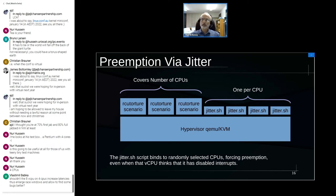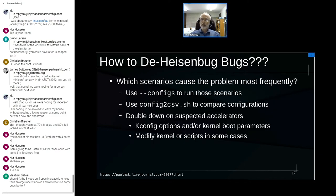Another approach: if only a few scenarios reproduce the bug, use --configs to run just those. The config-csv.sh script makes a spreadsheet of kconfig options and boot parameters for each scenario, which can point you right to the bug by highlighting what's different about the failing scenarios. You can then double down on suspected accelerators by specifying kconfig options or boot parameters. In some cases I've had to modify the kernel or scripts to force things to happen more often.